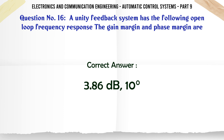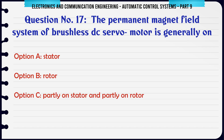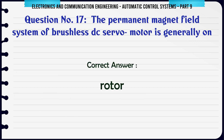The permanent magnet field system of a brushless DC servo motor is generally on: A. Stator, B. Rotor, C. Partly on stator and partly on rotor, D. Either A or B. The correct answer is: Rotor.